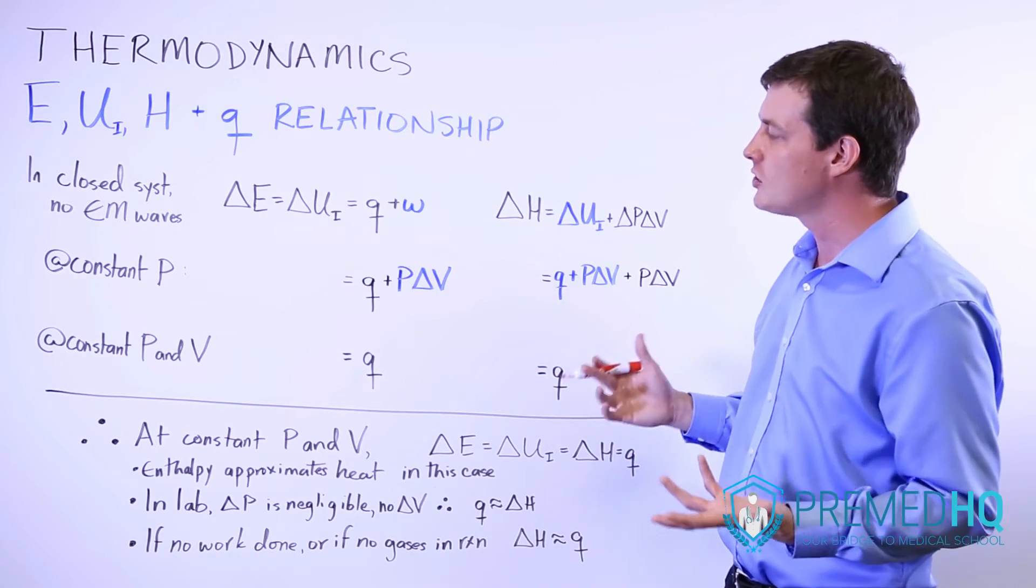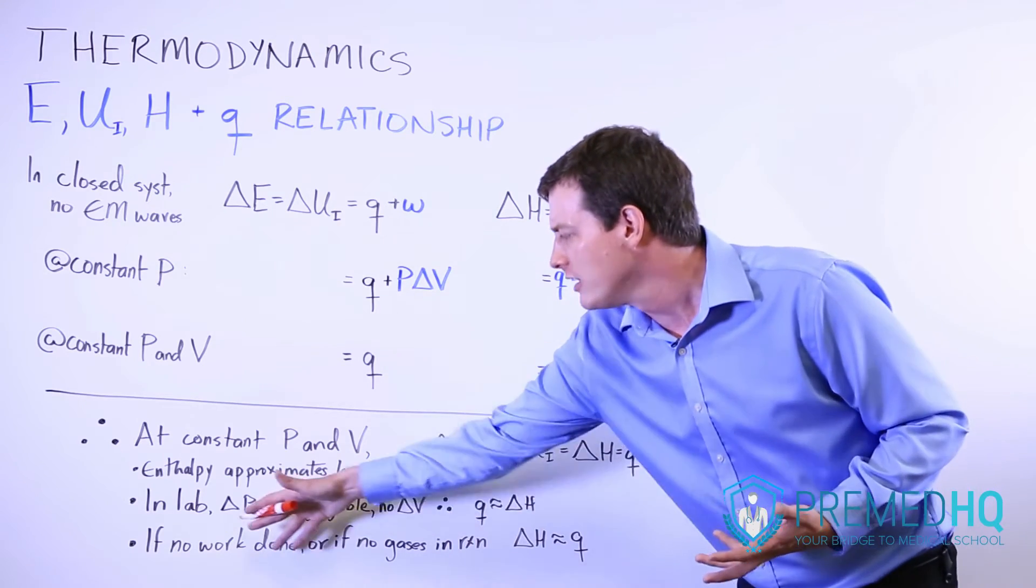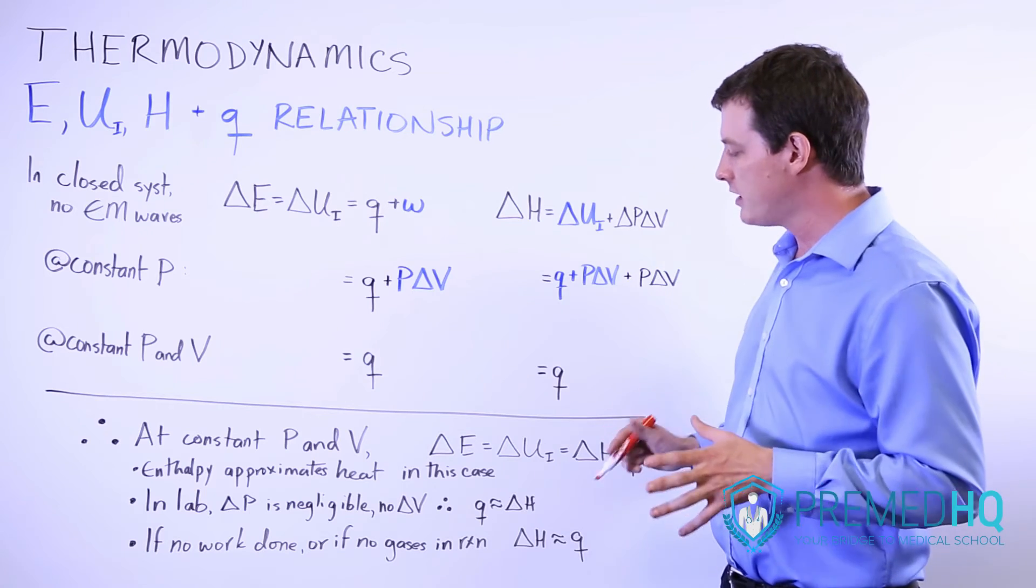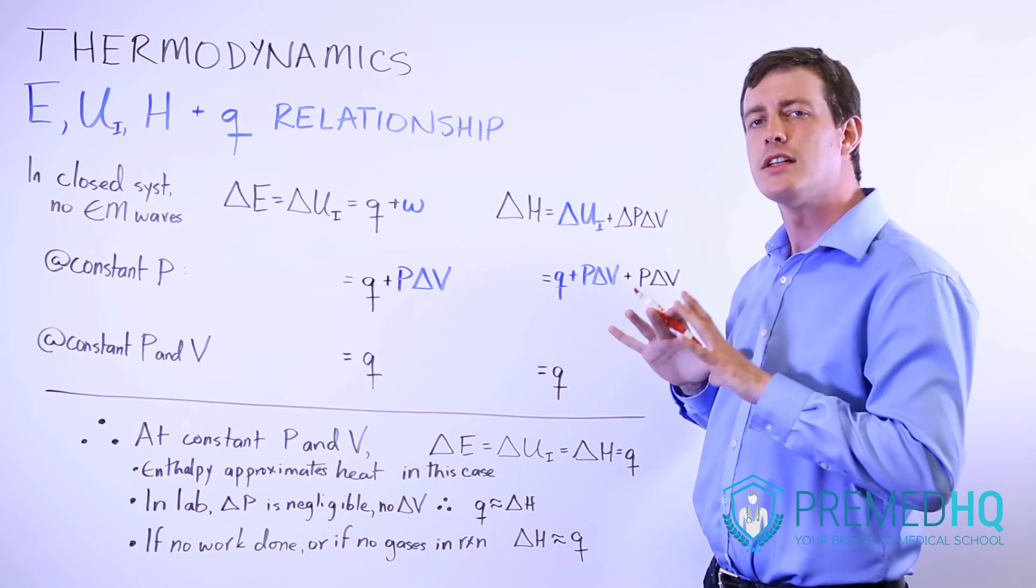So we can assume that because we have no change in volume, it's constant volume, and relatively constant pressure, in a lab environment we can assume that heat approximates enthalpy. And that makes our calculations a lot easier.